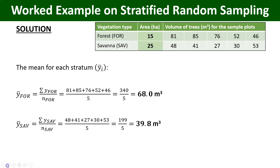To solve this, we first need to compute the mean volume for each stratum. For the forest area, we find the average of the five plot volumes, and for savannah we do the same. The mean is simply the total divided by the number of observations. For the forest vegetation type we get 68.0 cubic meters, and for the savannah vegetation type we get 39.8 cubic meters.